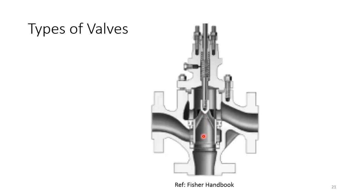A three-way valve has three flanges connected to three pipes — hence it is three-way. It could be a mixing type or a diverting type.